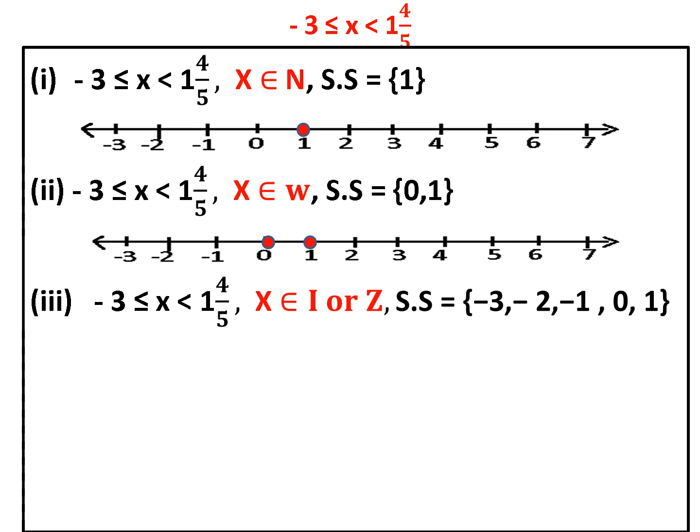For x belongs to integers, we need all integers between minus 3 and 1 and 4 upon 5. We must be careful here — minus 3 is an integer and it will be included in the solution set because the condition is minus 3 less than or equal to x. Hence, our solution set is {minus 3, minus 2, minus 1, 0, 1}.